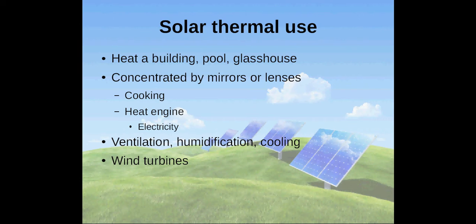Heat can also be used to ventilate, humidify, or even cool a building because it can move air and water. In a much bigger context, this leads to another form of using solar energy indirectly: wind turbines.